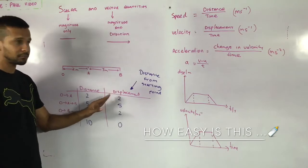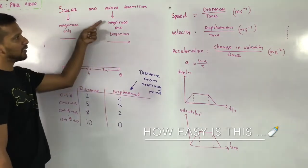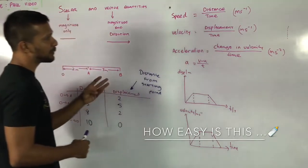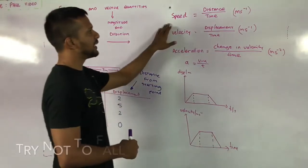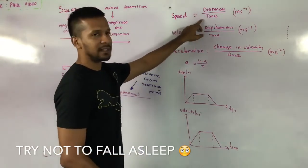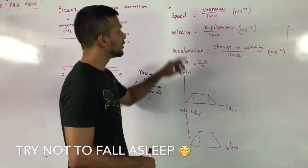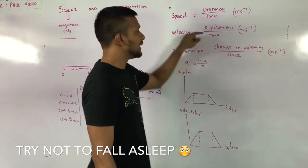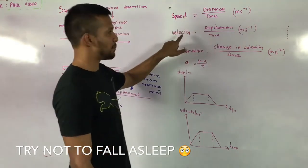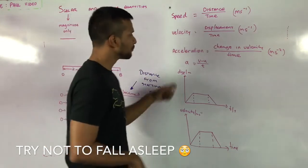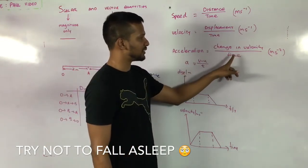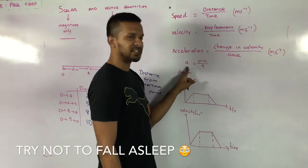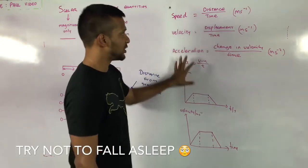Now we come to three new quantities called speed, velocity and acceleration. Speed is a scalar — distance travelled divided by time. Its unit is m/s. Velocity is displacement divided by time. Its SI unit is m/s, and this is a vector quantity, so direction matters. Acceleration is the change in velocity per unit time — based on how your velocity is changing with time, you have your acceleration. These are three things you must learn, along with understanding the difference between a scalar and a vector quantity.